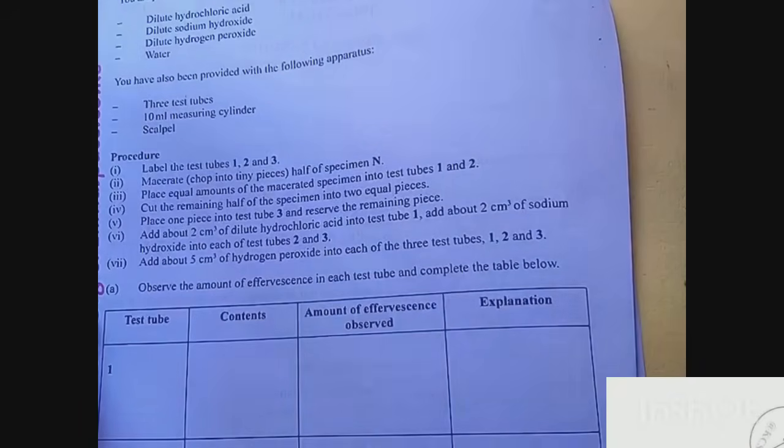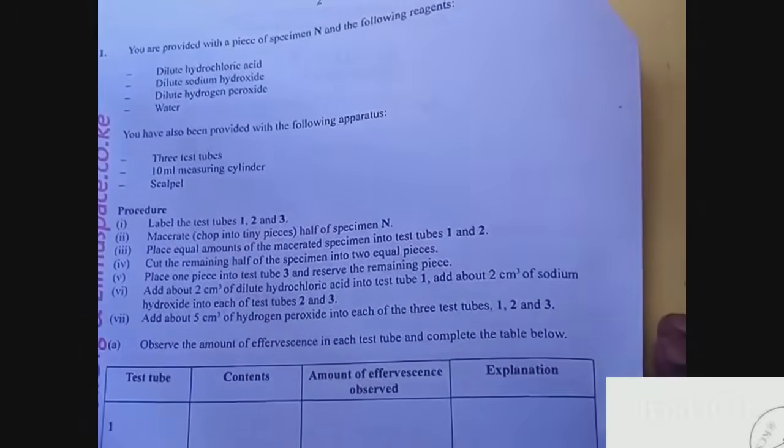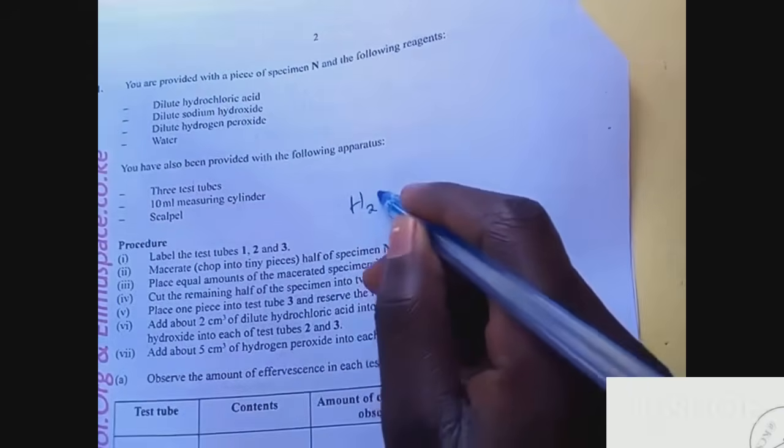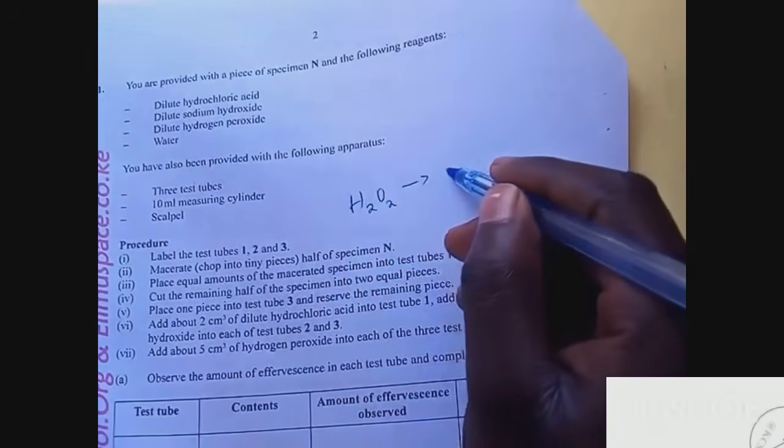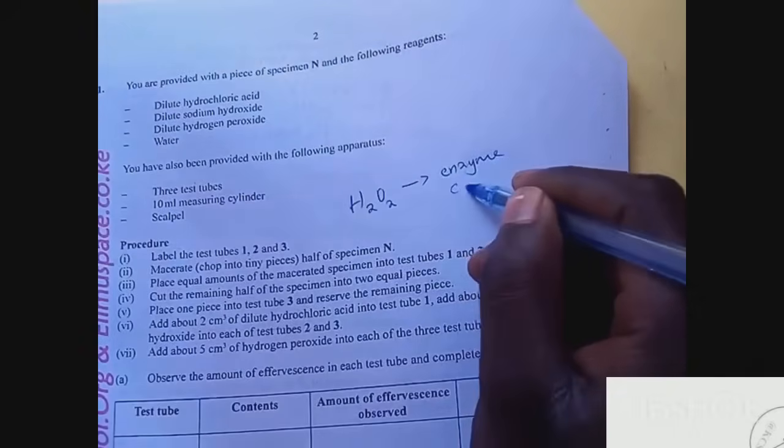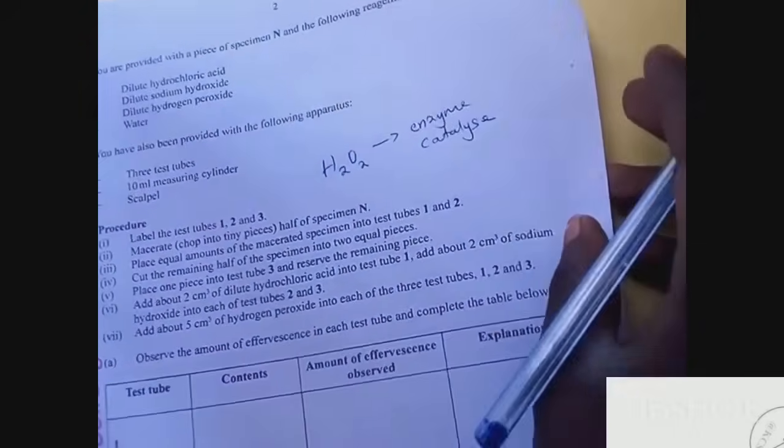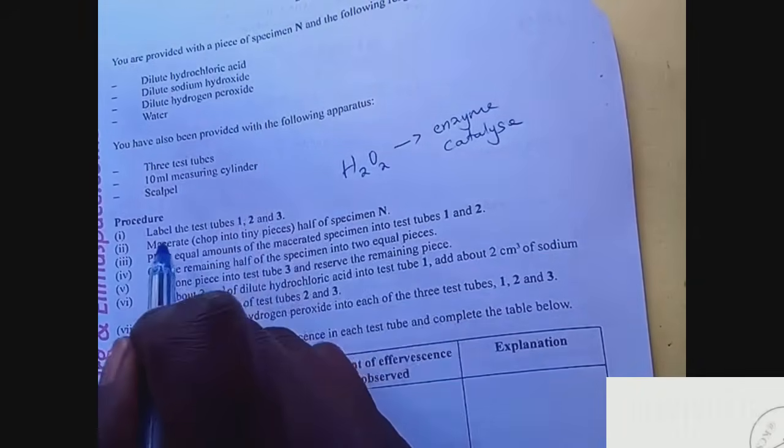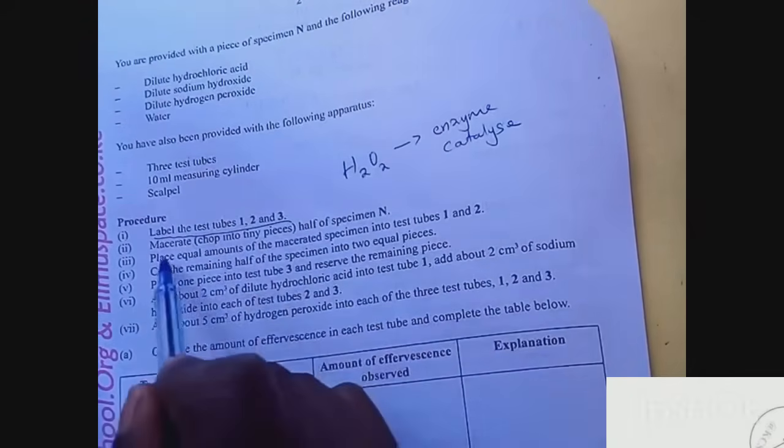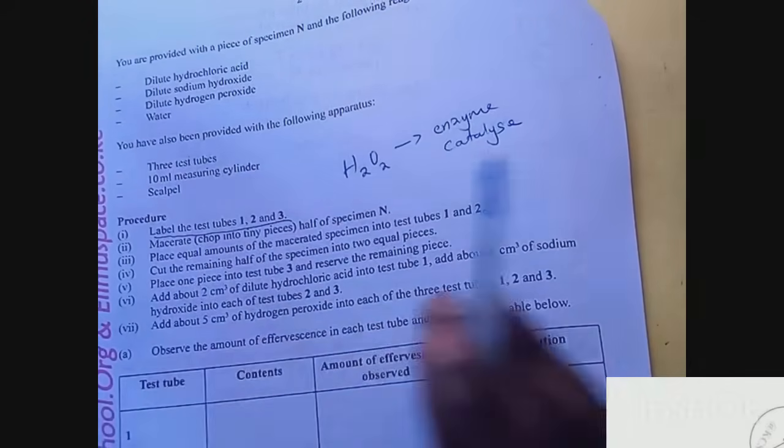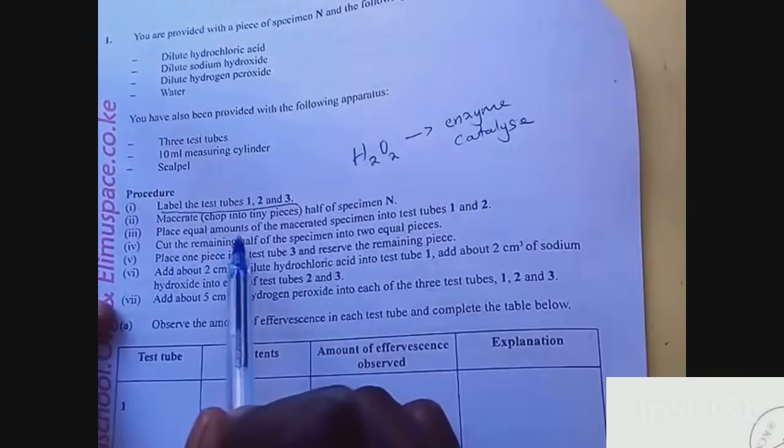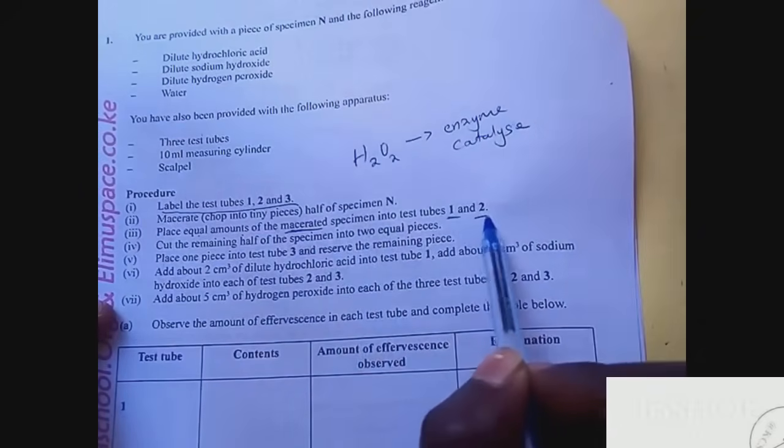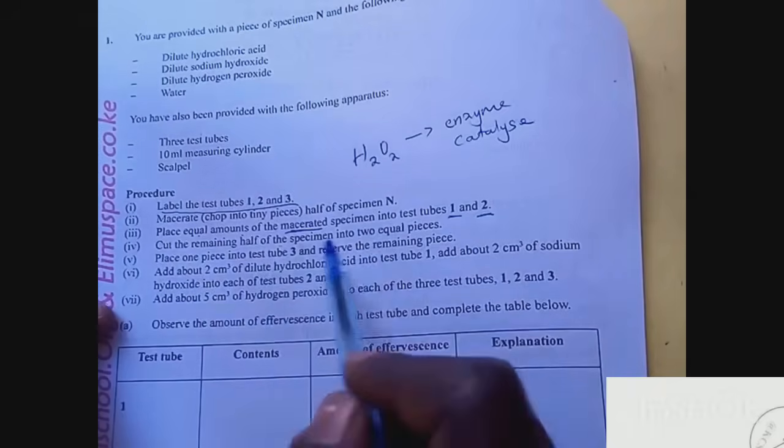Observe the amount of effervescence in each test tube and complete the table. First of all, students should be able to know what is being tested. When you see hydrogen peroxide, you automatically know that you're testing for enzyme catalyst. Let's start the procedure again. You are provided with these reagents. Label the test tubes. Macerate is to cut into small pieces. Place equal amounts of specimen into test tubes one and two, then cut the remaining half into two equal parts.